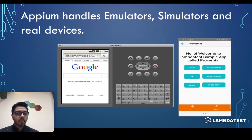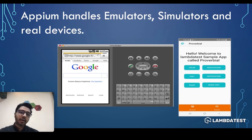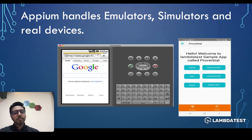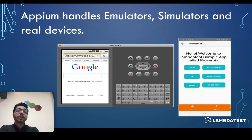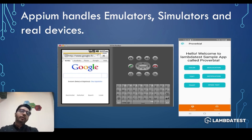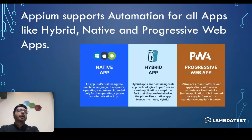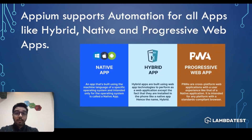The key point is that Appium gives us the flexibility to use emulators, simulators, and real devices. Whether you're in a small or large organization, with or without devices, you don't have to worry. Since Appium is open source and emulators can be created on your machine, you can create a proof of concept without any real devices at all. Next, Appium supports automation for all types of apps.